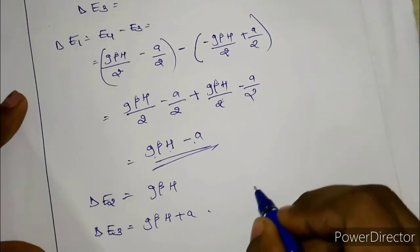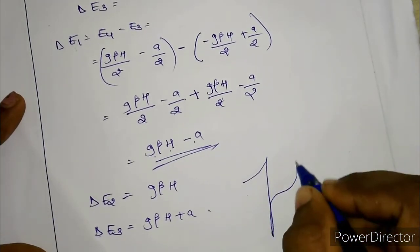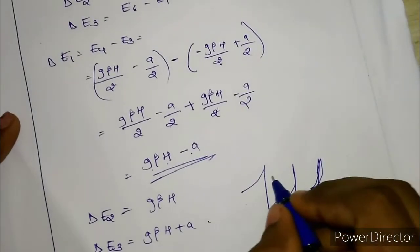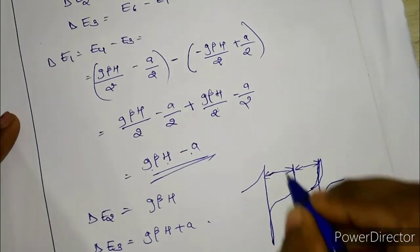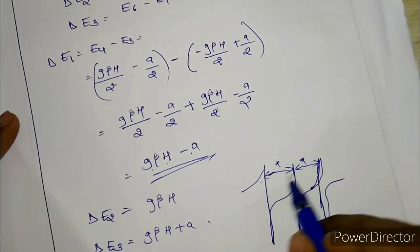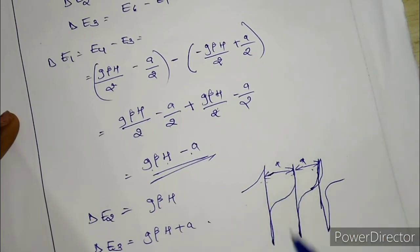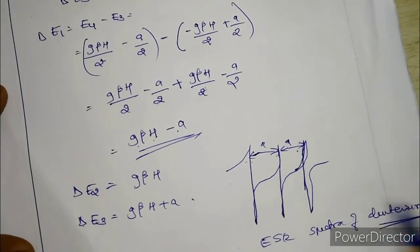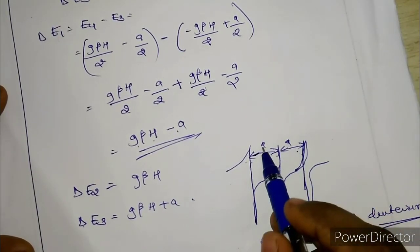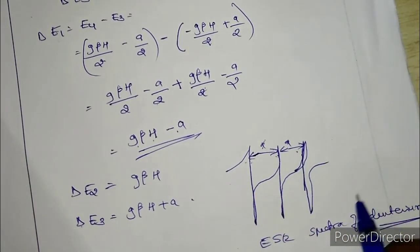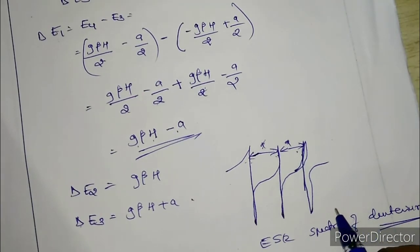Because there are three transitions, we get three peaks in the ESR spectrum. The separation between the peaks is A, the hyperfine splitting constant. This is the ESR spectrum of deuterium — three lines with separation A between them. If you have any doubts about this concept, please let me know in the comment section. Thank you for watching.